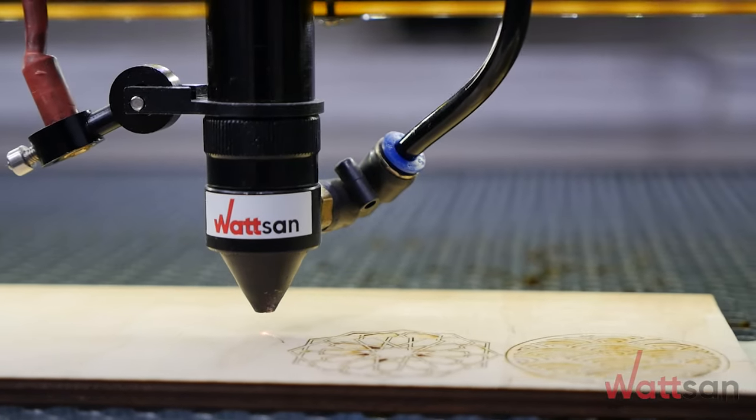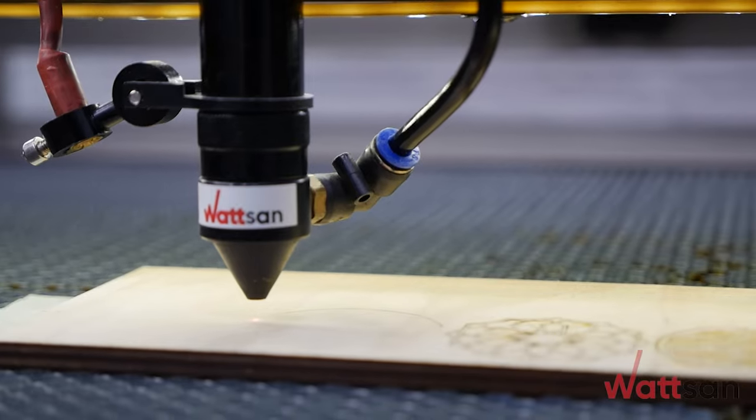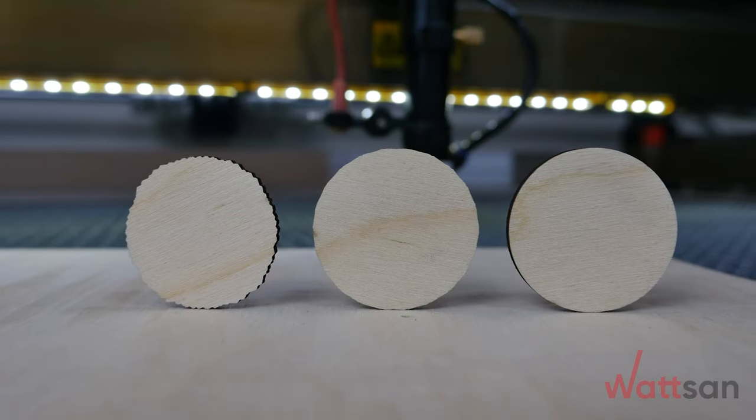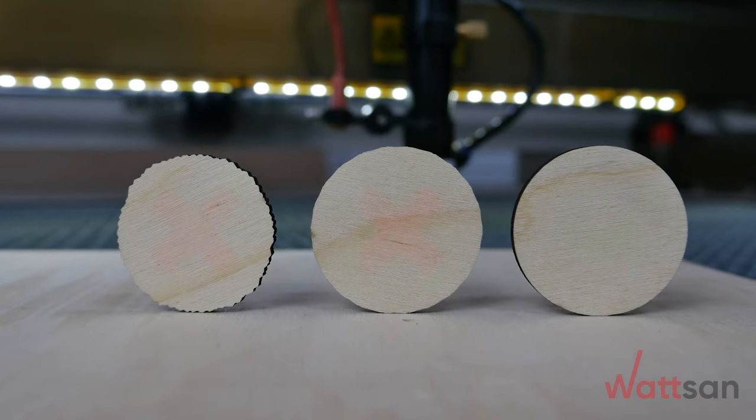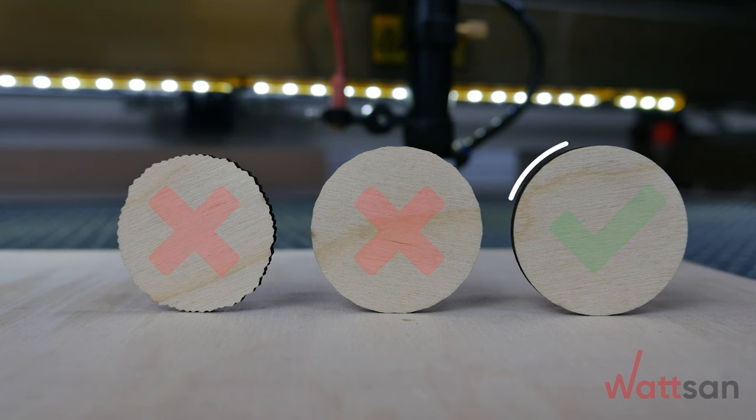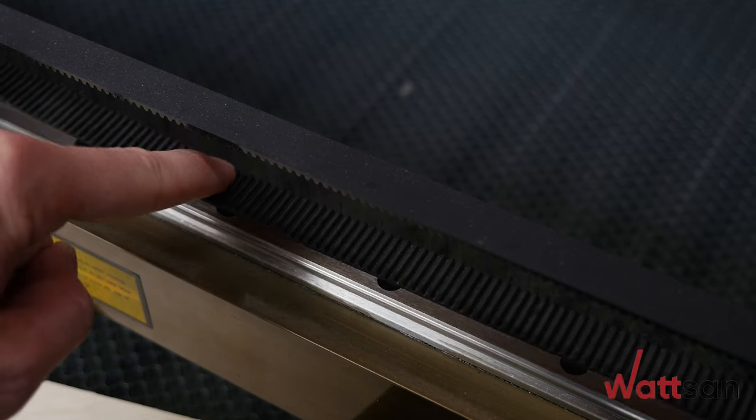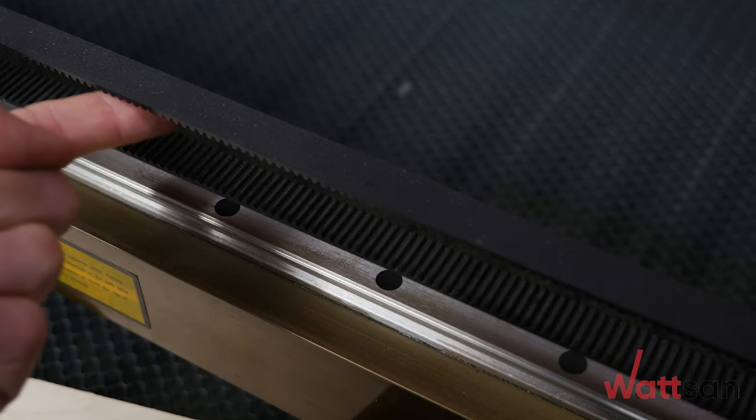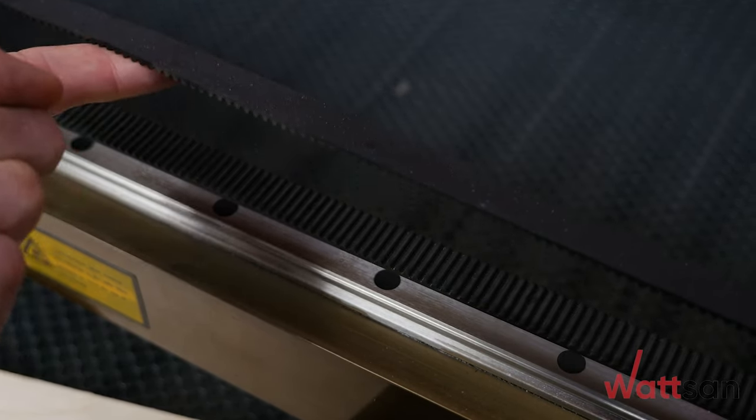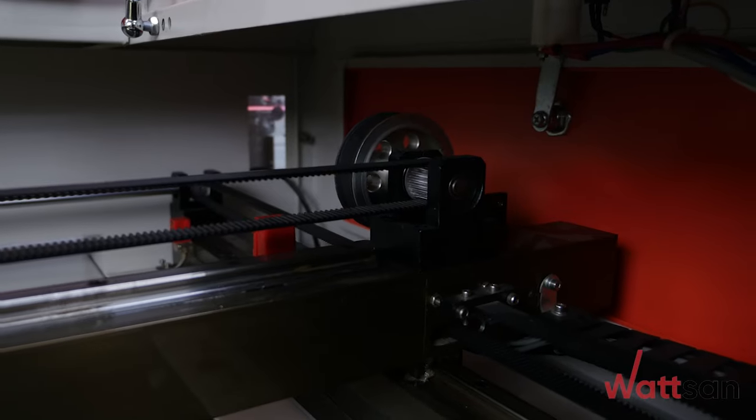Our specialists are always ready to help you with choosing the most optimal equipment for your tasks. In order to avoid rifled kerfs, you should monitor the belt tension. Belts should not sag or be overstretched. We are constantly making modifications based on our customers' feedback and improving the quality of our machine tools.